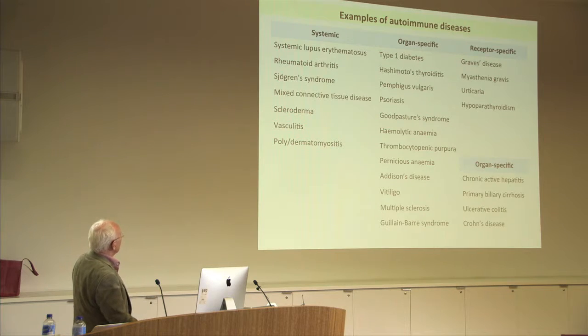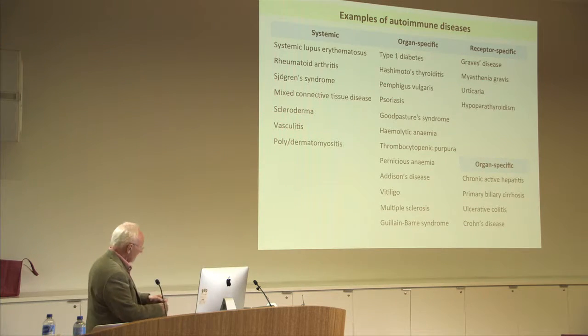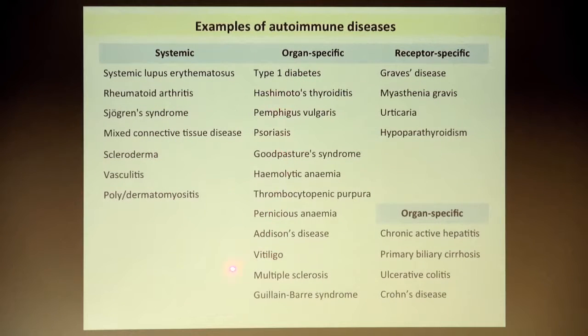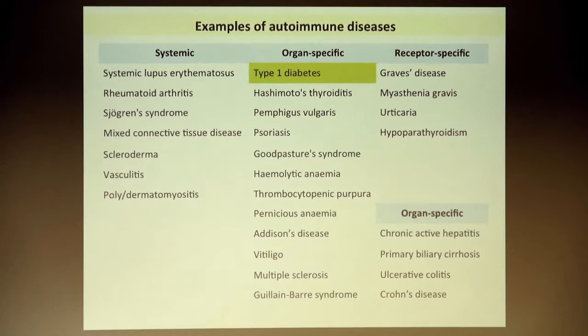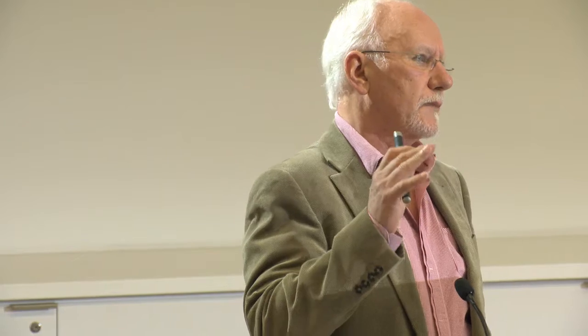Some of those 81 autoimmune diseases include systemic diseases, organ or tissue-specific diseases, and some directed particularly by autoantibodies to specific receptor switches on cells in the thyroid gland, in the muscles, in the skin, and in the parathyroid gland. Today I want to focus on type 1 diabetes, and some of the things I'm going to say about type 1 diabetes will apply to the other autoimmune diseases.